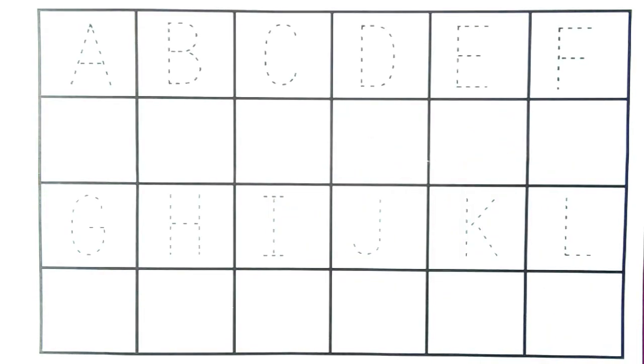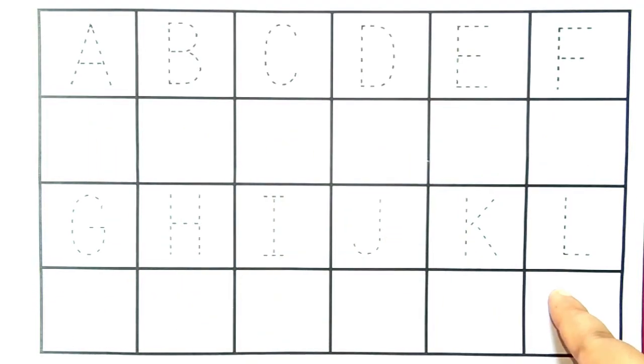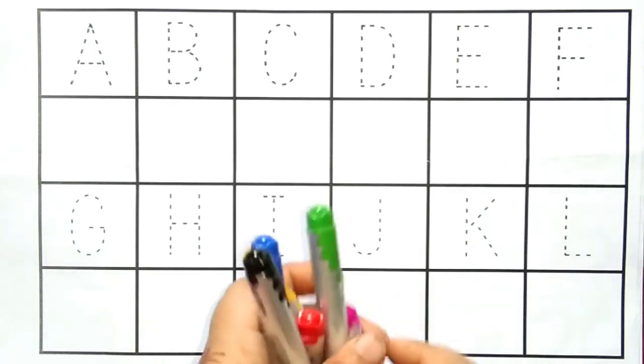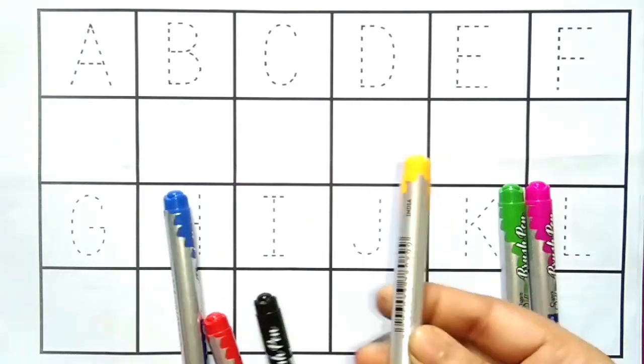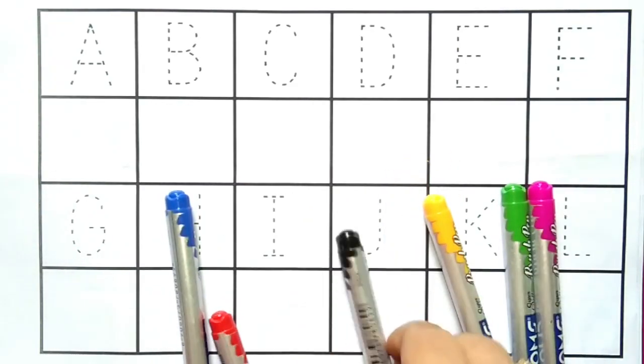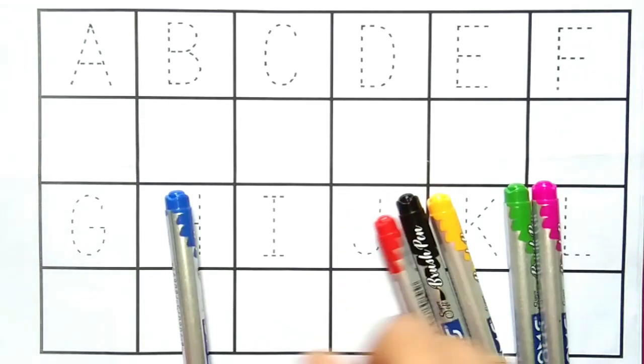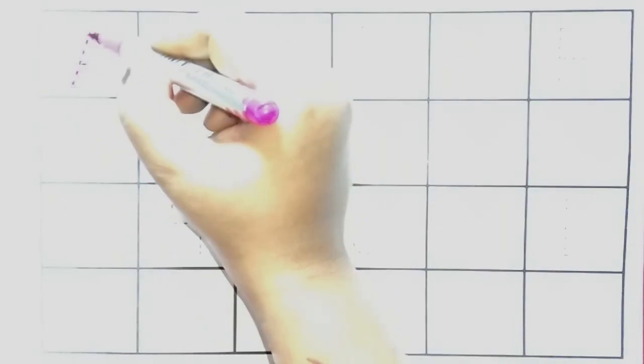Hello kids, welcome to my channel. Let's learn ABCD alphabets and 1 to 12 numbers counting. Let's learn some colors name: pink color, light green color, yellow color, black color, red color, and blue color.